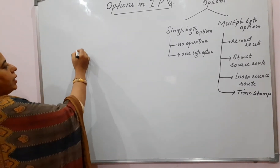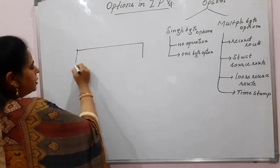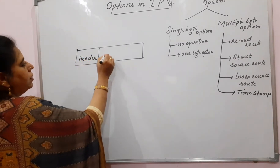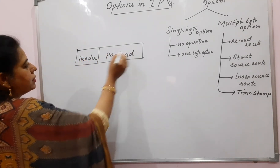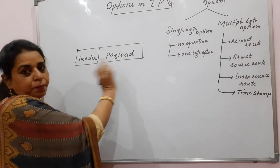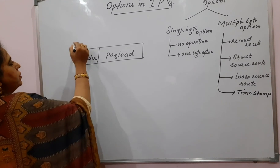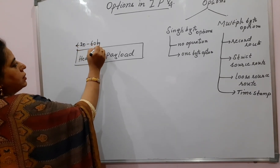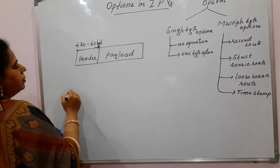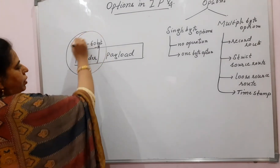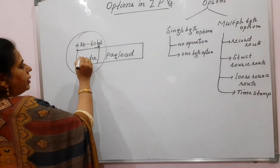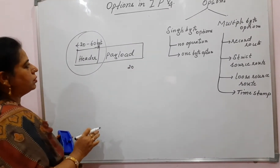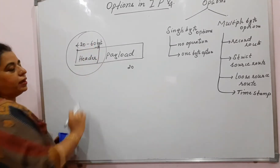Let us first see the IPv4 datagram structure. The IP datagram is divided into two parts: the header part and the payload part. The size of the header starts from a minimum of 20 bytes and a maximum of 60 bytes. In this header part, whatever I explained in lecture number 15 — the header consisting of 20 bytes — all those fields have been explained. The one that is pending is the options.